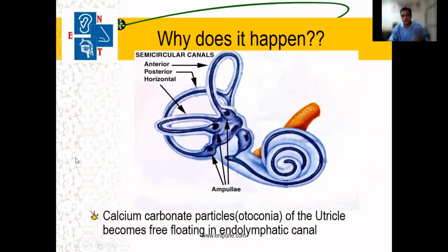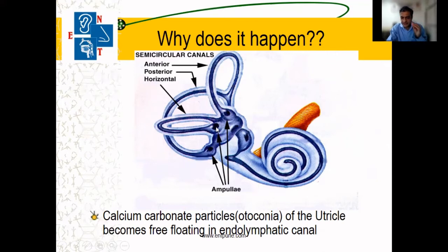Why does BPPV happen? I am stressing on this because it is the most common cause. These are the semi-circular canals. The utricle area contains some calcium carbonate particles.